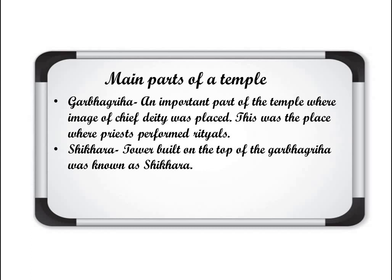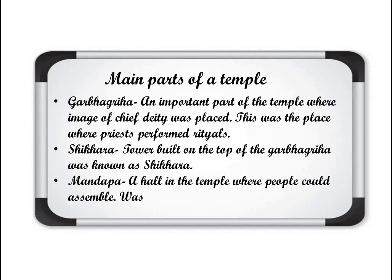During that time also, the Shikhara — the top tower of the temple — was built on the Garbhagriha. The third main part is Mandapa — a hall in the temple where people could assemble, called Mandapa. It was a hall-like room in which people could gather for different rituals in the temple.